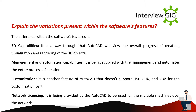Explain the variations present within the software's features. The differences within AutoCAD's software features include: 3D capabilities — AutoCAD can view the overall progress of creation, visualization, and rendering of 3D objects. Management and automation capabilities — it is supplied with management tools and automates the entire process of creation. Customization — AutoCAD supports LISP, ARX, and VBA for the customization part. Network licensing — it is provided by AutoCAD to be used for multiple machines over the network.